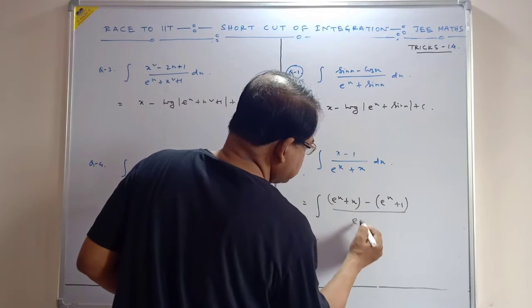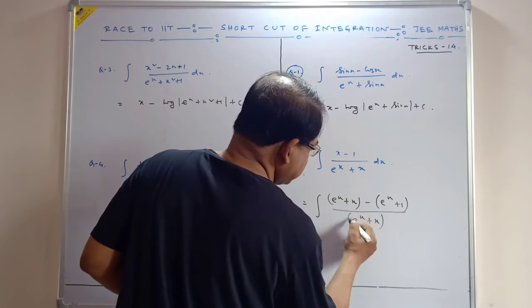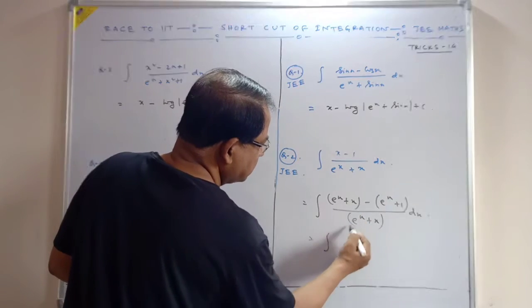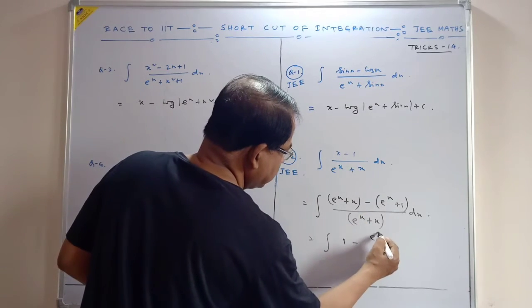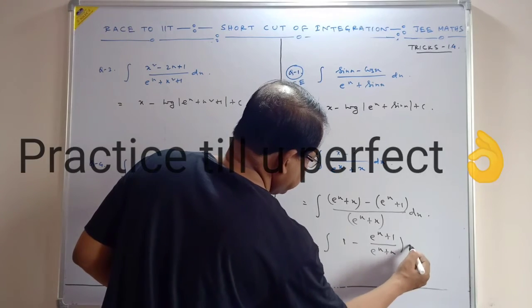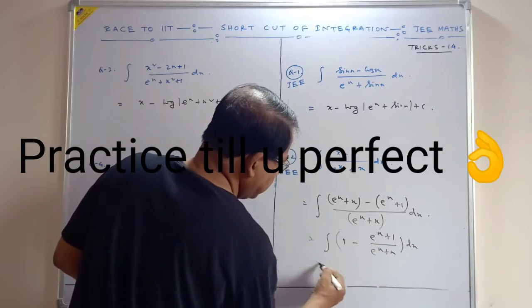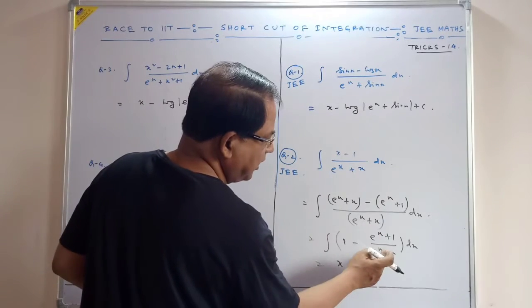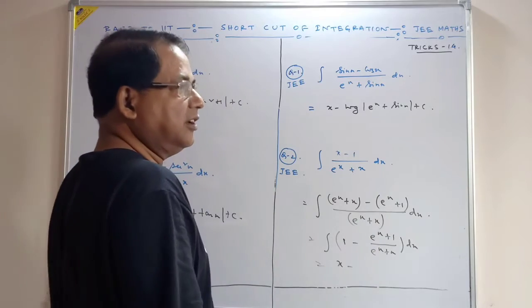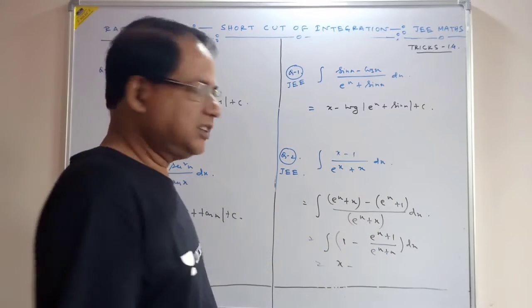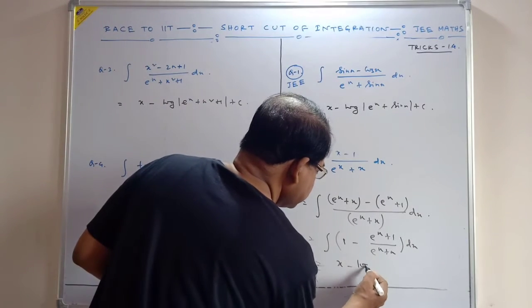This is integral of e to the power x plus x dx. Separate it: this is 1 minus e to the power x divided by e to the power x plus x dx. Suppose this is dt.